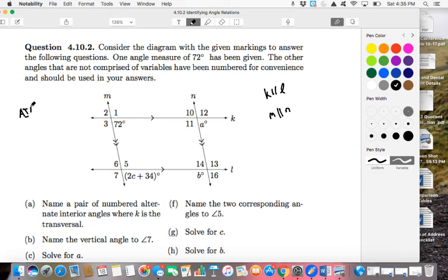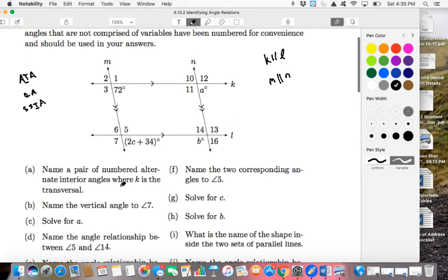Alternate interior angle relationships, corresponding angle relationships, and same-side interior angle relationships. If it helps you, I definitely think you should put this right there in the margin of your page just to be a quick reference for remembering, okay, what am I looking for? What kind of tools do I have to use?